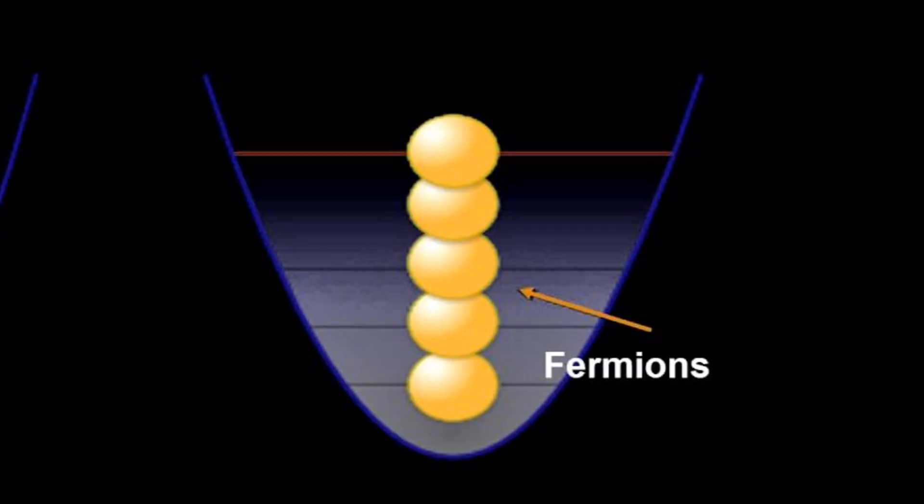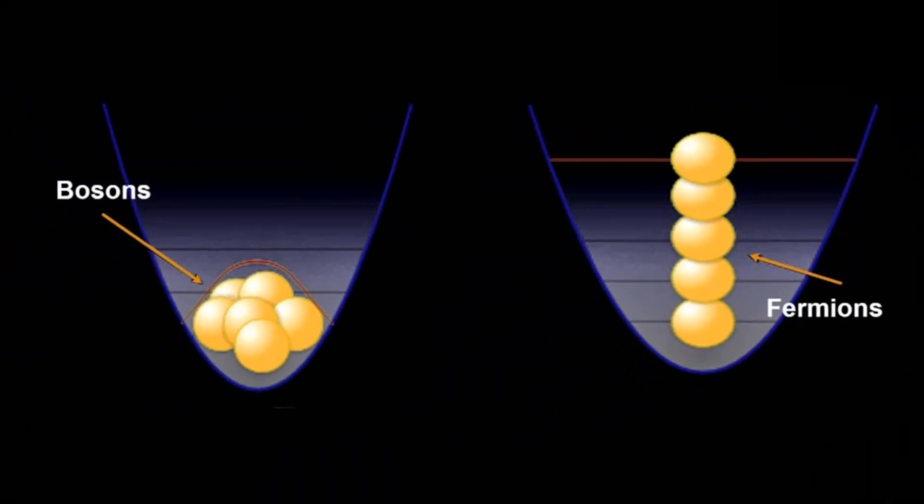Why is this? Since fermions make up matter, they physically take up space, while bosons, the carriers of energy, can pile into each other.